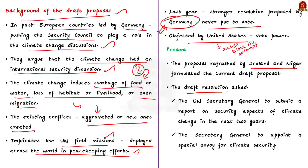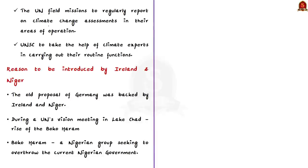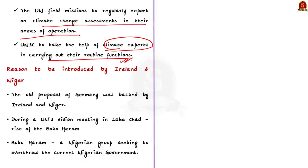The draft resolution called on the UN Secretary General to submit a report on the security aspects of climate change within the next two years, asked the Secretary General to appoint a special envoy for climate change, asked UN field missions to regularly report on climate change assessments in their areas of operation, and asked the Security Council to take the help of climate experts in carrying out their routine functions.